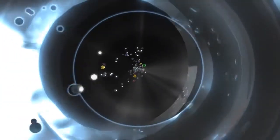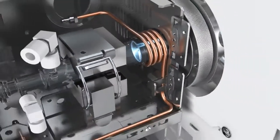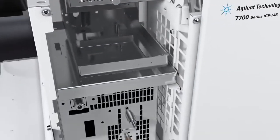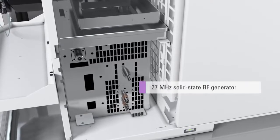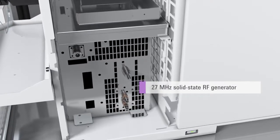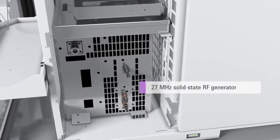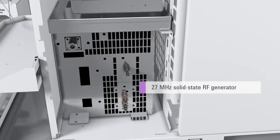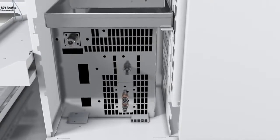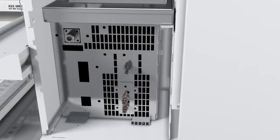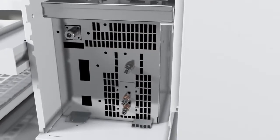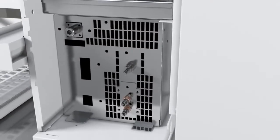The plasma of the 7700 is powered by a unique digital drive solid state 27 MHz RF generator, which provides the highest power transfer efficiency of any ICP-MS. This delivers the most effective matrix decomposition, lowest interferences and highest sensitivity, especially important for poorly ionized elements.